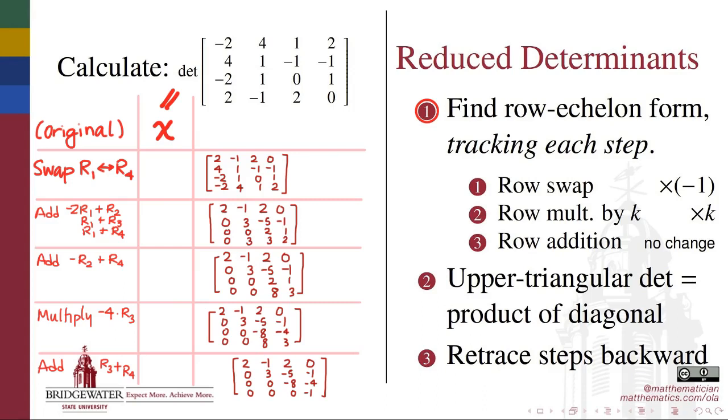And notice that I've kept very careful track of the steps that I've used, and that's not just because I want my professor to give me full marks for the row reduction, but it's because we can trace those steps backwards, investigating their effect on the determinant to compute the determinant of this original matrix. For example, the row swap that we did on the first step here has a predictable effect on the determinant of a matrix.